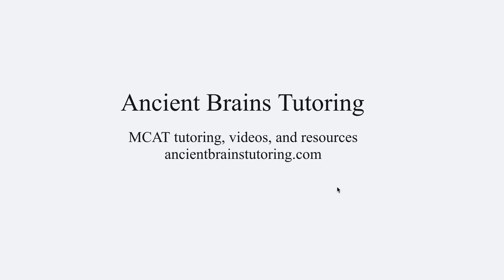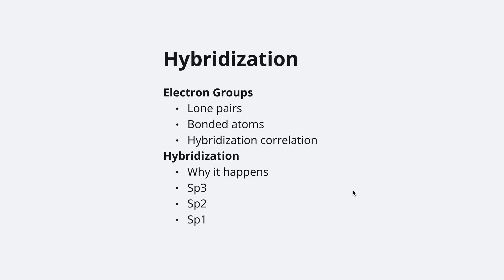This video is part of the MCAT Chemistry video course. Subscribe for notifications about new videos, and visit ancientbrainstutoring.com for questions about one-on-one virtual MCAT tutoring. In this video we're going to go over hybridization — first establishing what electron groups mean, then how that correlates to hybridization, and we'll cover sp3, sp2, and sp1 hybridization.